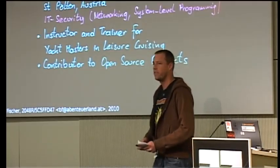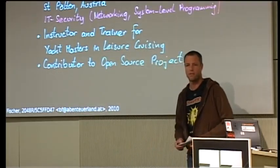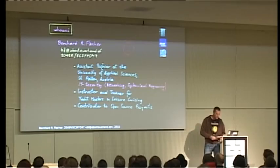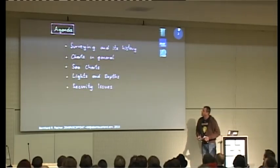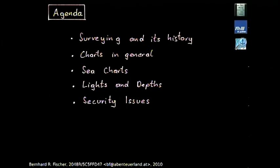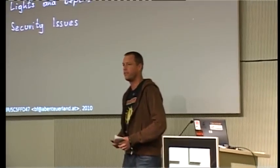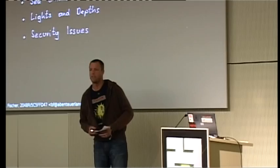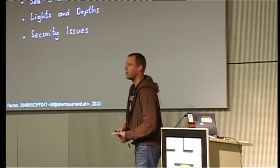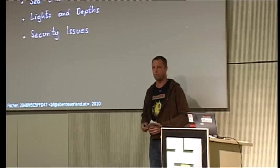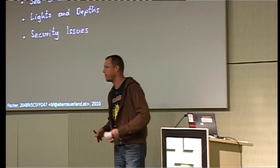I'm an IT security guy. Two years ago I had a talk here about OnionCat, anonymity software — a completely different topic. So what are the difficulties? I will give you a brief history of surveying and cartography, then talk about charts in general and sea charts specifically, then about my part of the project — the lights and depth problem. Of course, there are security and safety issues with all of this.